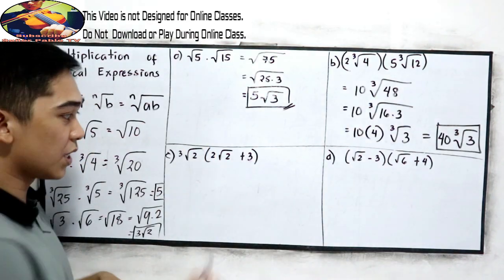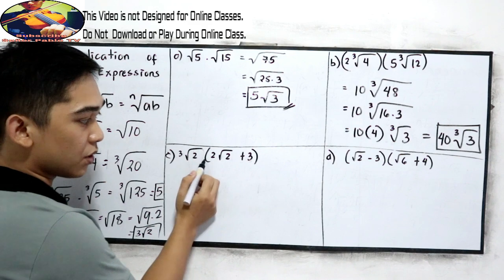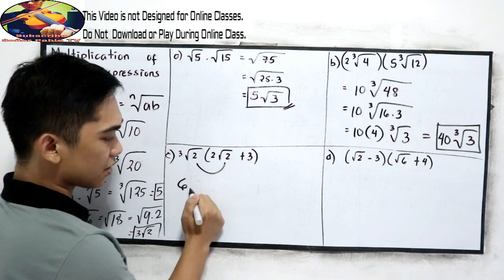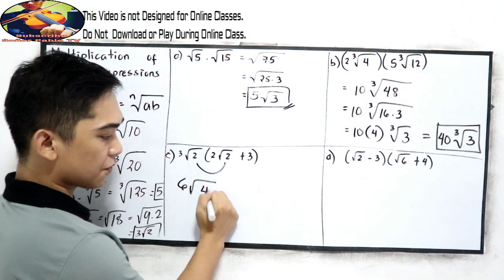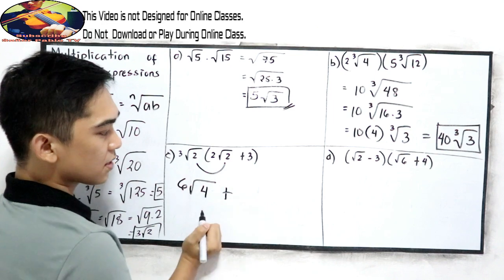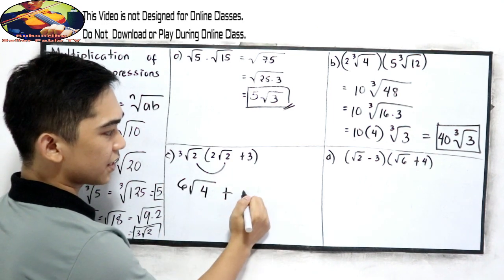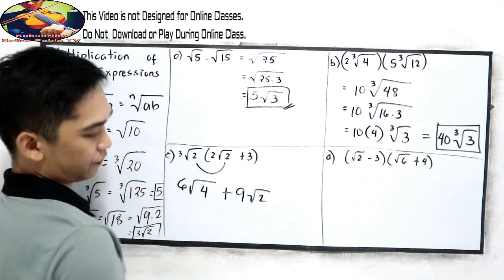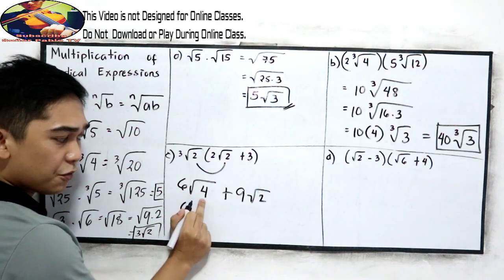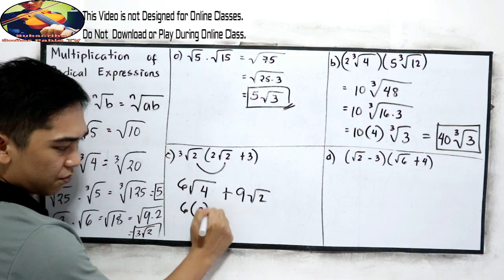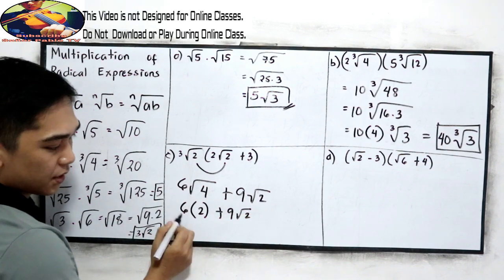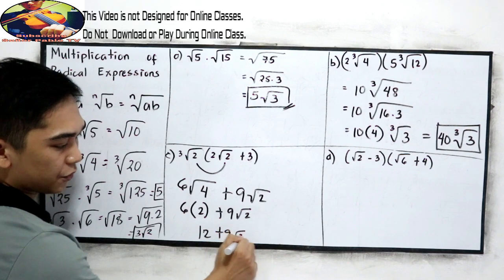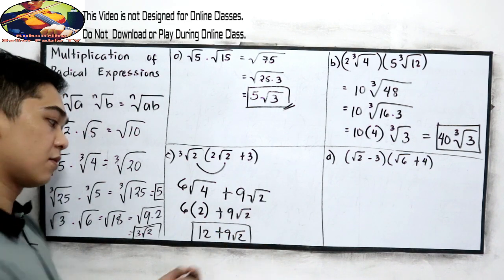For letter C, we need to distribute 3 square root of 2 times quantity 2 square root of 2 plus 3. Distribute: 3 times 2 is 6, square root of 2 times 2 is square root of 4, plus 3 times 3 is 9, square root of 2. So 6 square root of 4 — square root of 4 is 2 — gives us 12, plus 9 square root of 2. So our final answer is 12 plus 9 square root of 2.